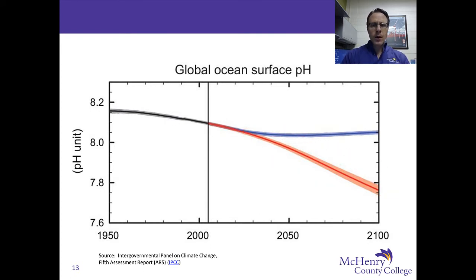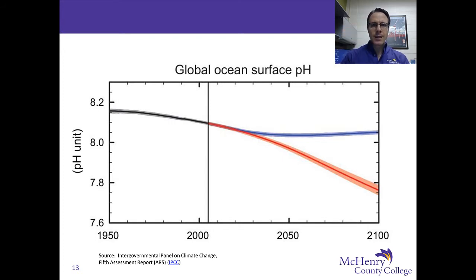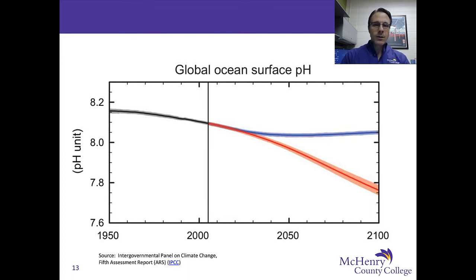This is important because phytoplankton — the plant and animal life that float on the surface of the water — form the basis of the food chain, and they require a particular level of alkalinity or acidity in the solution they live in. Once water becomes too acidic or too alkaline, they die. That removes the base of the food chain, with a ripple effect throughout. Scientists and governments are concerned about this, and these two scenarios represent the scientific consensus of climate scientists and oceanographers as they assess current and projected pH levels of our ocean surfaces.